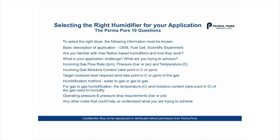To select the right humidifier, we use what we call the Permapure 10 questions. We ask for a basic description of the application, your familiarity with how Nafion works, your application challenge and what you're trying to achieve, all parameters relating to incoming and outlet gas moisture content, target moisture level required, whether you're doing water-to-gas or gas-to-gas, temperatures, pressures, and any other relevant notes. The more information you can provide, the better we can choose the right product for your context. That's the end of our presentation — thank you for listening.